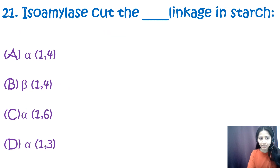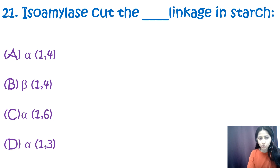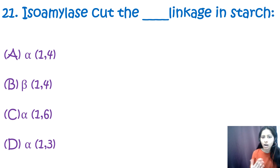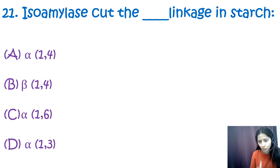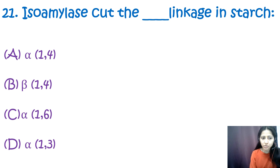Question 21: Isoamylase cuts which linkages in starch — alpha 1,4; beta 1,4; alpha 1,6; or alpha 1,3? The correct option is C — alpha 1,6. Isoamylase is a starch debranching enzyme that cuts at alpha 1,6 linkages in starch, playing a crucial role during the breakdown of alpha polyglucans such as amylopectin.